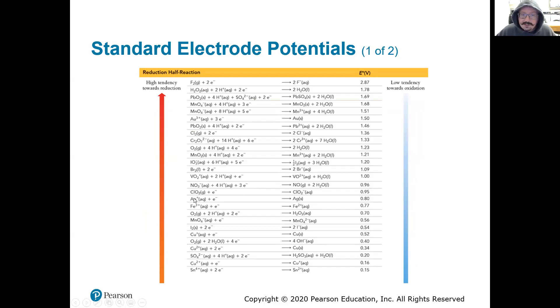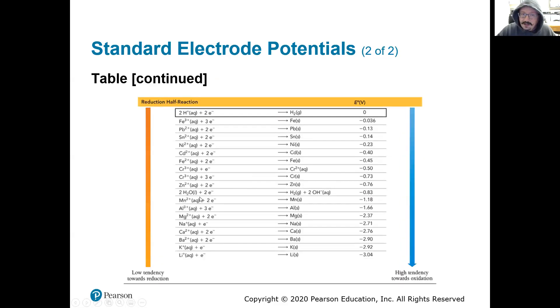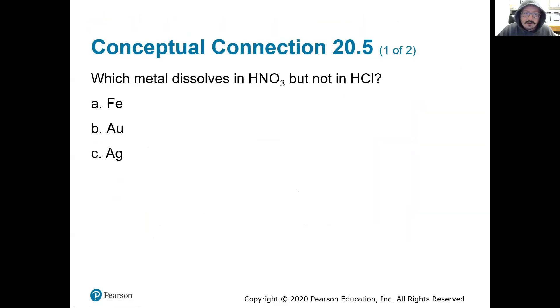And then our other example was silver. We find silver right here. Well, silver is above H plus, so it won't dissolve in HCl, but it is below that NO3 minus, that nitrate. So it will dissolve in nitrate. So that's why silver would be the answer for this question right here.